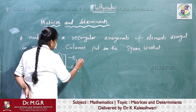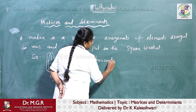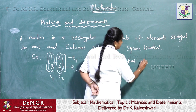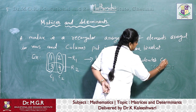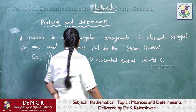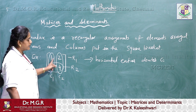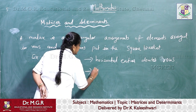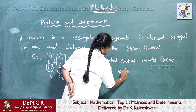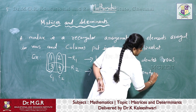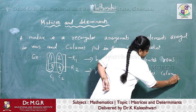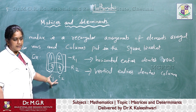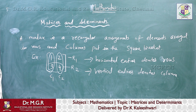Horizontal entries are denoted as rows, and vertical entries are denoted as columns. So the arrangements put in rows and columns within brackets define a matrix.